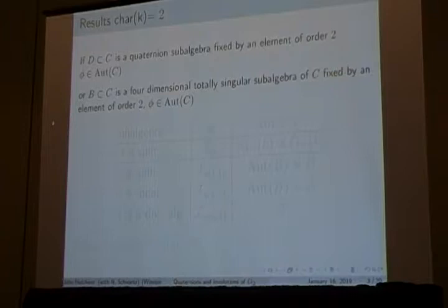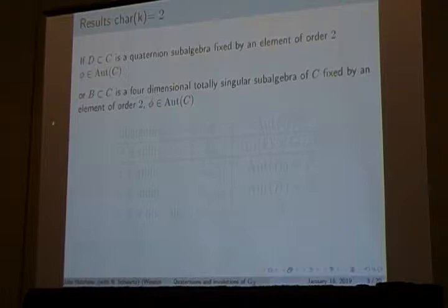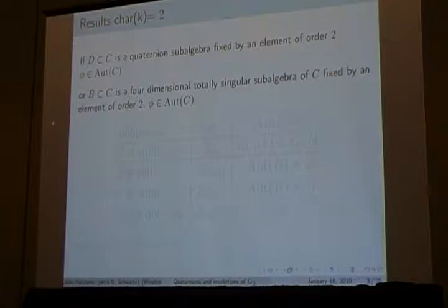We also did this over characteristic two. Characteristic two things fall apart geometrically. You still have these quaternion subalgebras, but everything in characteristic two is perpendicular to itself, and so you have all these problems that come up, and you get other types of four-dimensional subalgebras. These involutions are still fixing a subalgebra that's four-dimensional, but we don't call all four-dimensional subalgebras quaternion anymore — only the ones that are non-singular. If you have a non-singular bilinear form, we call it quaternion.